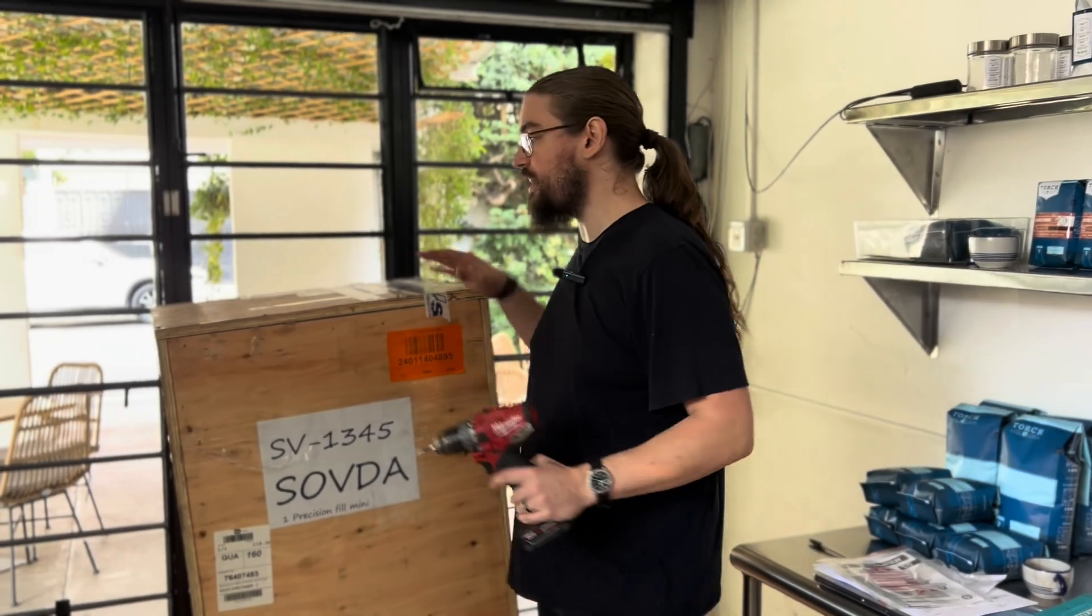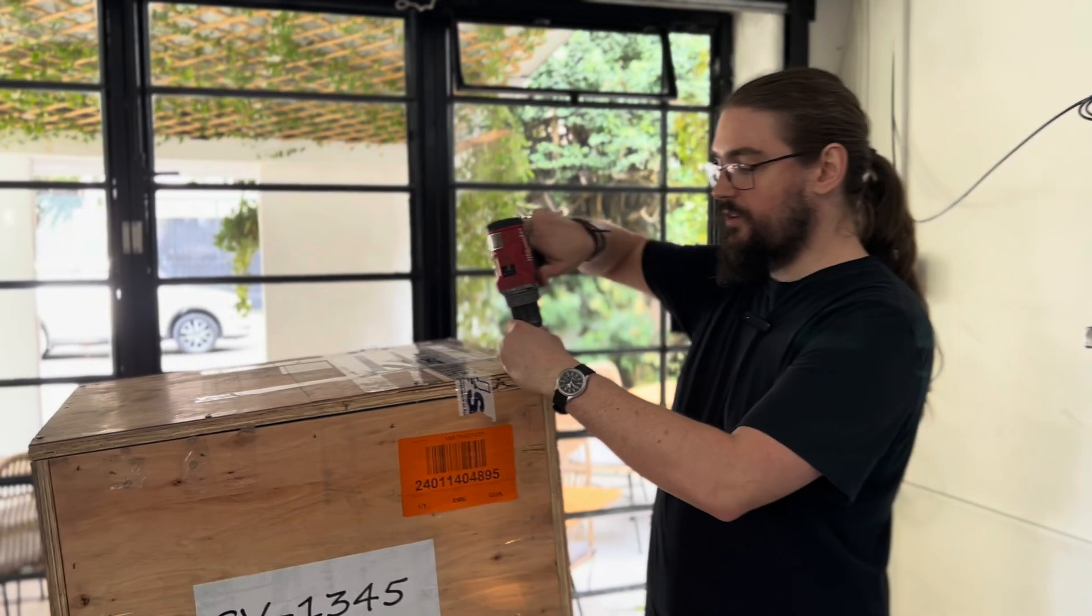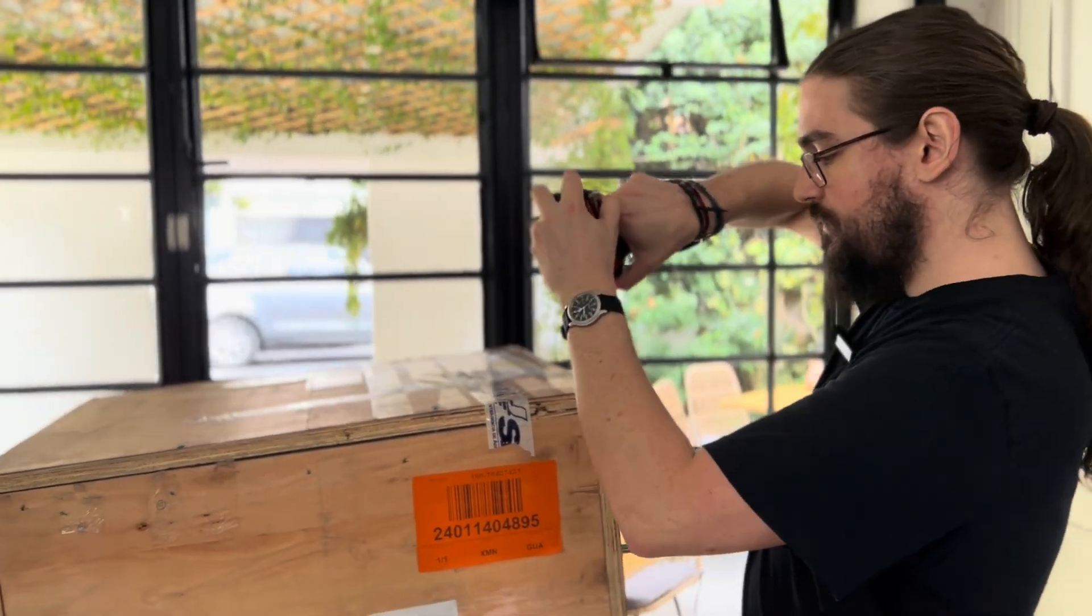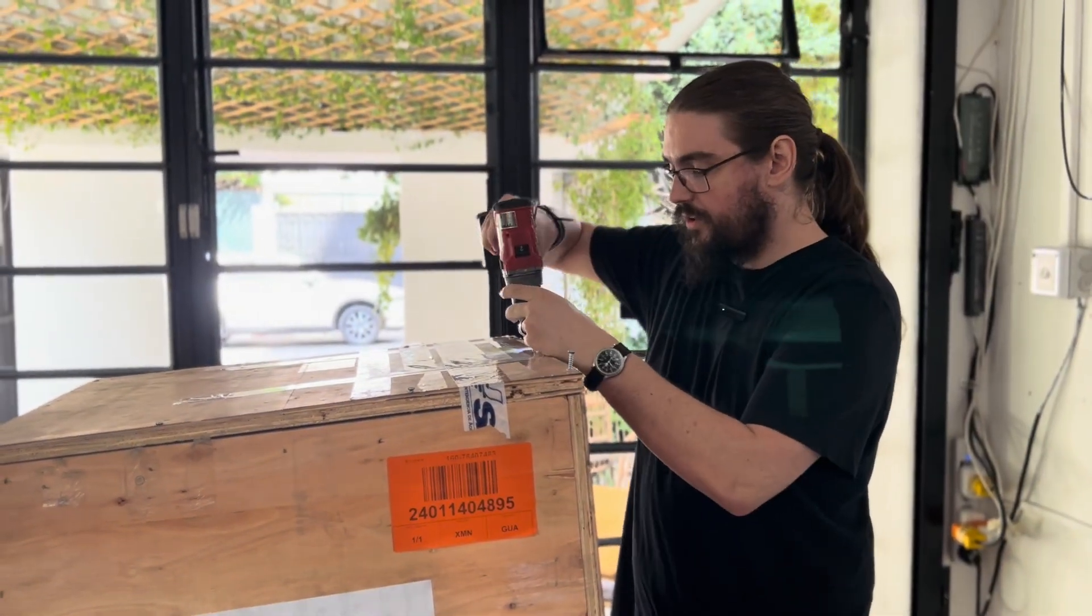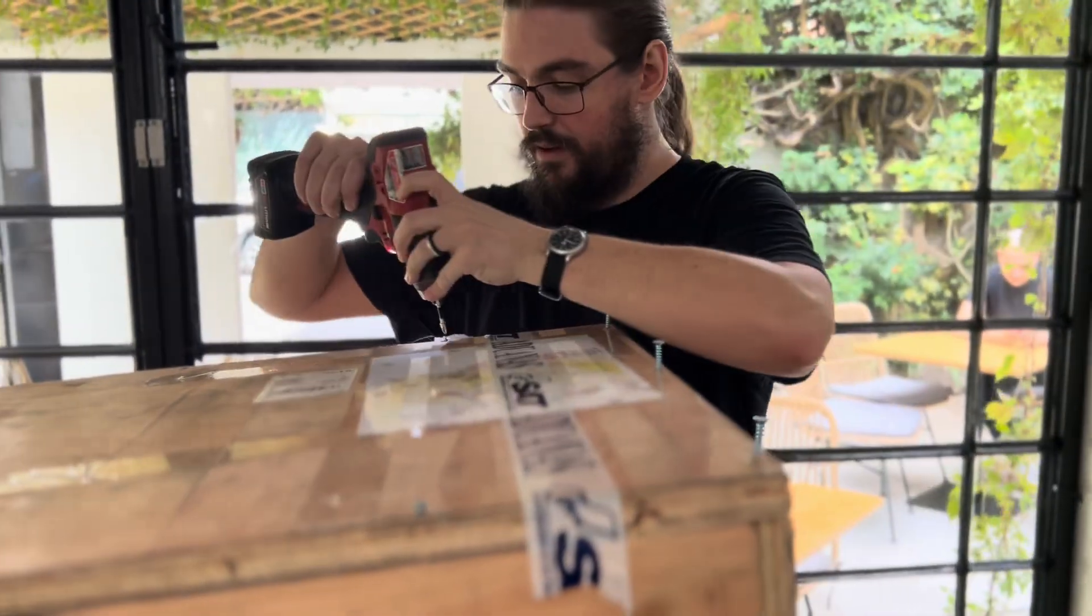We're going to start by taking the machine out of the crate. I like to pull the top off first. We're going to be using a Phillips number two driver, and we'll just pull out all of our fasteners up on the top here.